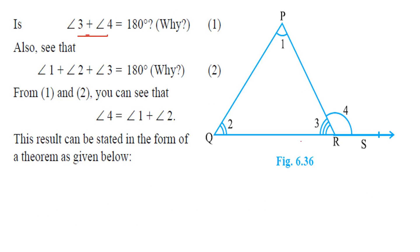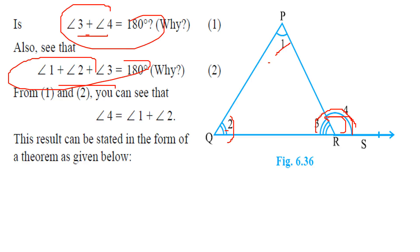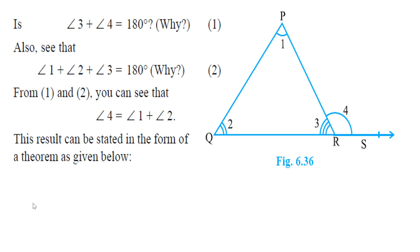Also, angle 3 plus angle 4 is equal to 180 degrees. Why? Because 1 plus 2 plus 3 equals 180 degrees, and angle 4 is simply equal to angle 1 plus angle 2, because the exterior angle is equal to the sum of the interior opposite angles. So angle 4 becomes equal to angle 1 plus angle 2, giving us 1 plus 2 equals angle 4.